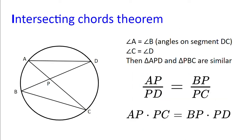Next, we have the intersecting chords theorem. So here we know that angle A equals angle B. Why? Well, because angles in the same segment are equal and the common segment here is DC.